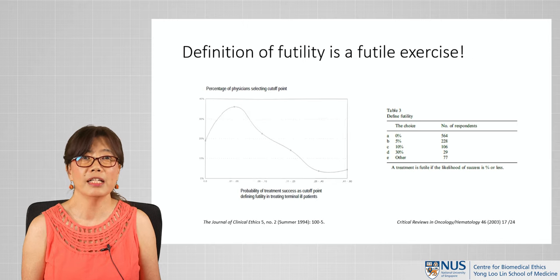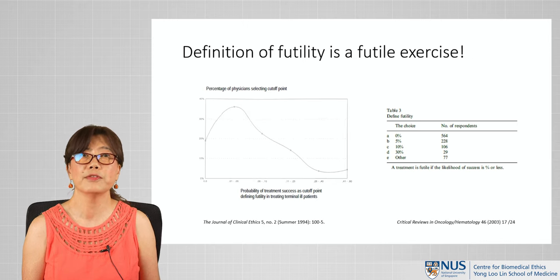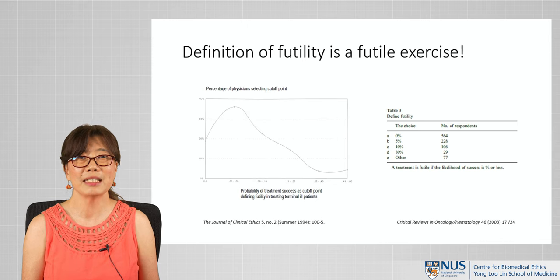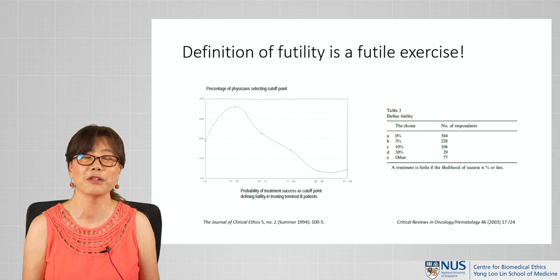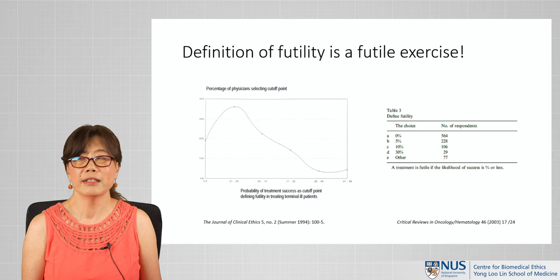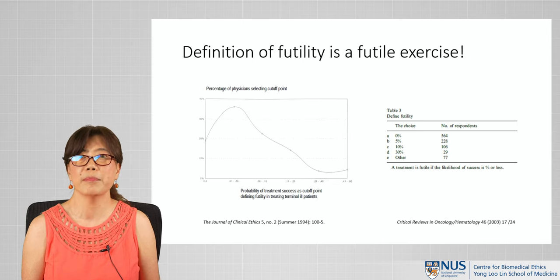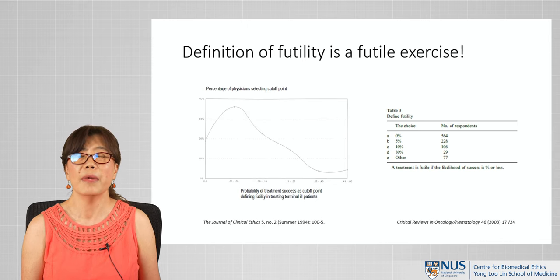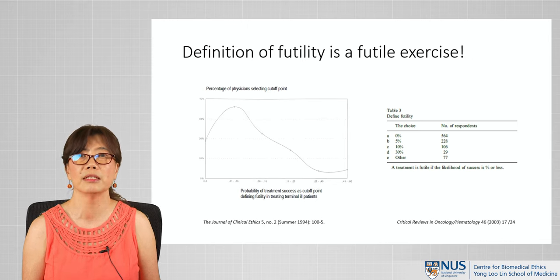This graph on the left shows a study done with medical staff asking them what they consider as futile in terms of the probability of treatment succeeding. As you can see from the graph, it ranges from as low as zero to as high as 60%, meaning some physicians feel that even though there is a 60% chance of treatment being a success, they can still call it futile. On the right, this is a table of results from a study on patients and family members, where they are asked to define what they consider as futility. The choices range from 0% all the way to 30%, and there are people who consider percentages higher than 30% as futile.